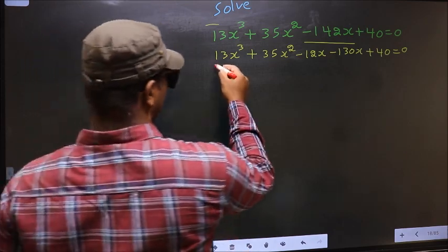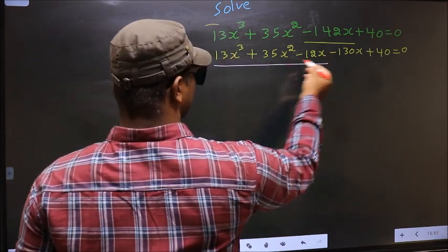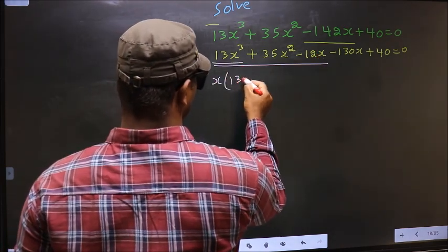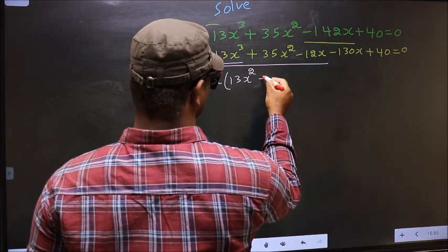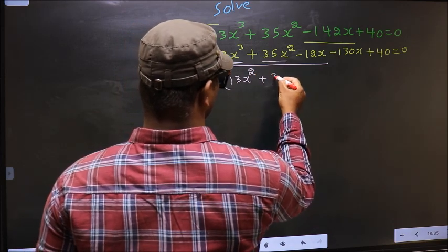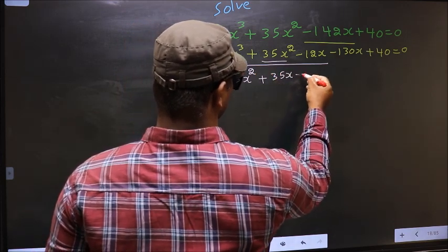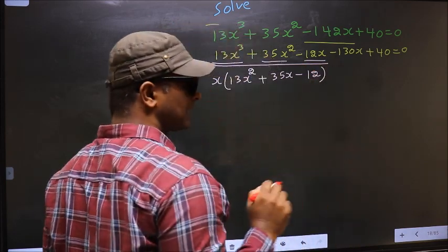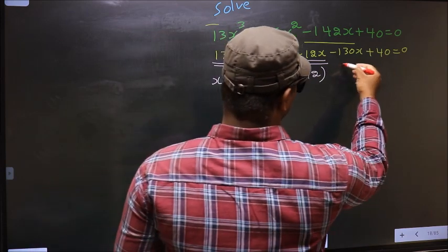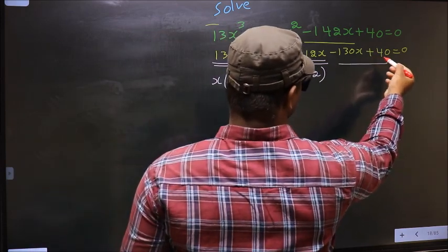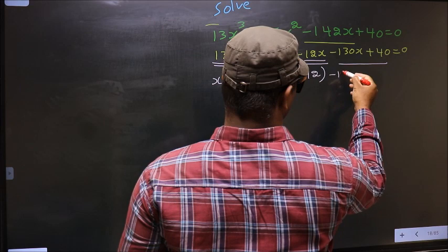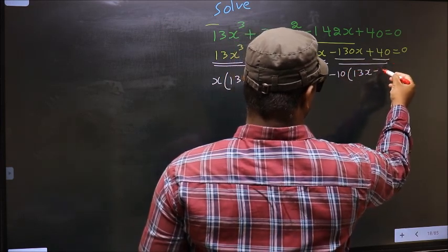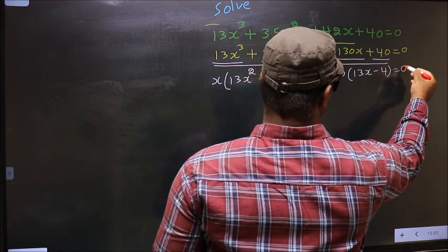What can be taken out common from these first three terms is x. So you get x(13x² + 35x - 12). What can be taken out common from the last two terms is -10. So you get -10(13x - 4) = 0.